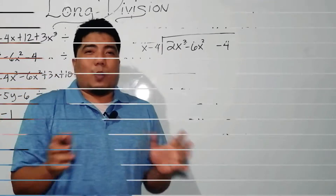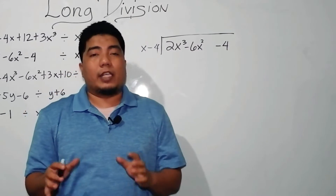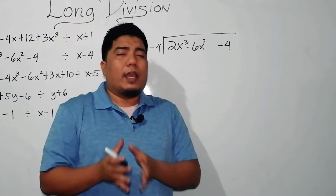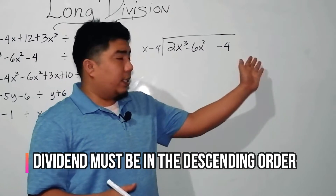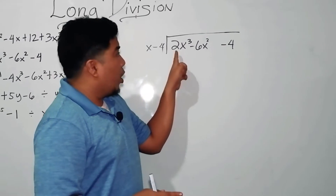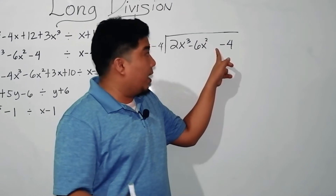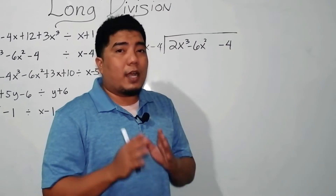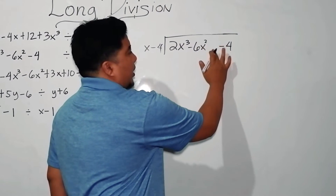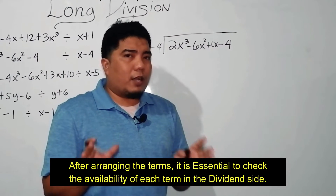Now let us go to our second example: 2x cubed minus 6x squared minus 4, divided by x minus 4. You may notice there is a space — remember, it should be in descending order. This is already in descending order. However, there is a missing term. 2x cubed is the cubic term, 6x squared is the quadratic term, while the linear term is missing, and this is your constant term. The linear term is a term with x to the first power. Since there is no linear term, we put plus 0x.